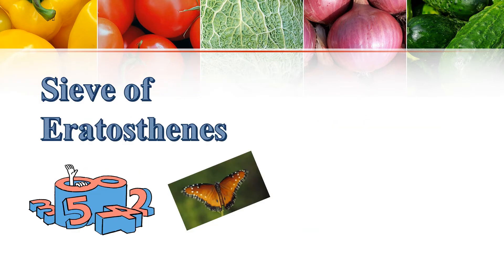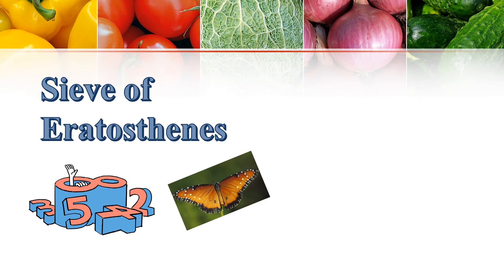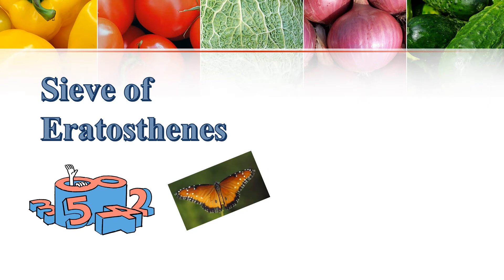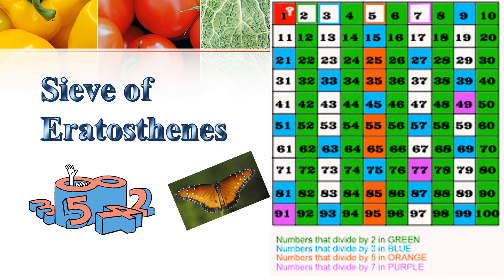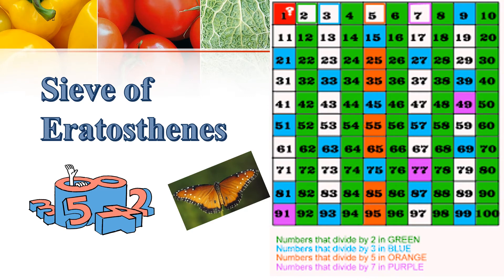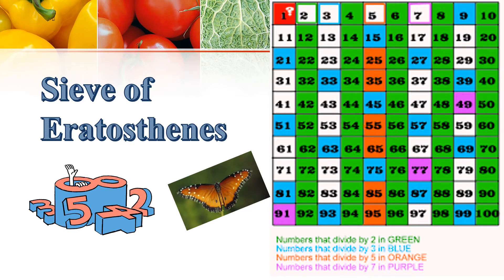A Greek mathematician named Eratosthenes found a method to find the Prime Numbers between 1 to 100. The method is called the Sieve of Eratosthenes. Let us see how this works. Write the numbers 1 to 100 in a grid as shown here. The number 1 is always unique — it is neither Prime nor Composite. So, leave the number 1.